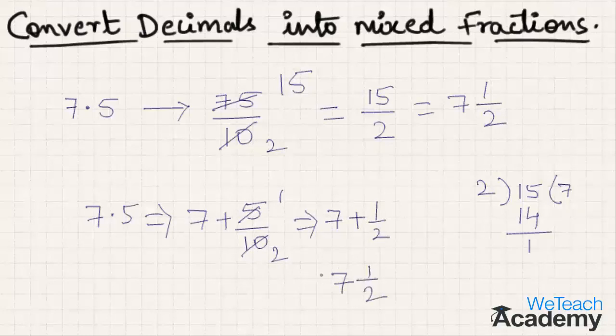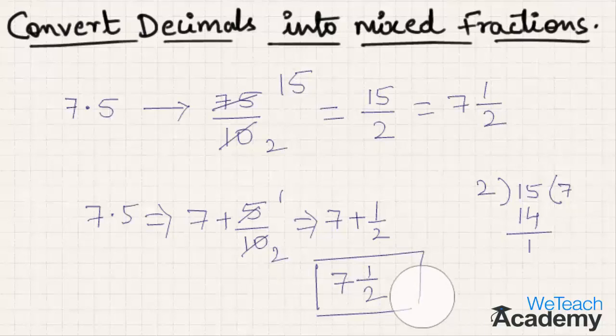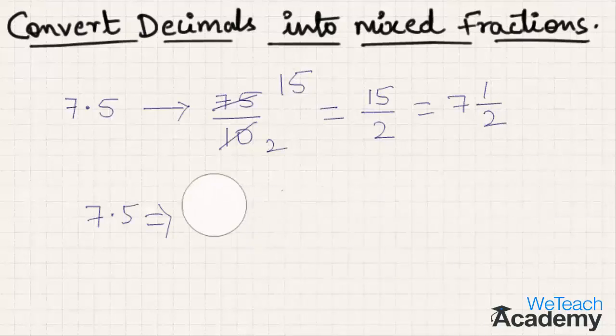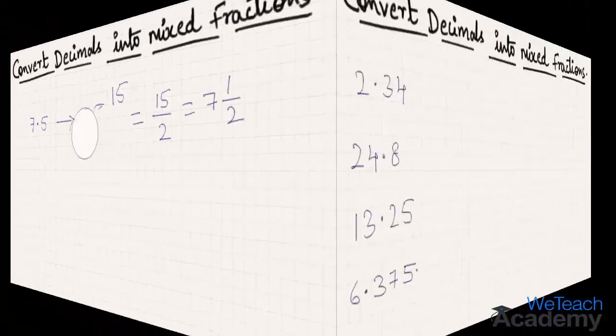Hence we get the same result. Therefore for converting decimal numbers into mixed fractions we can use any of these two concepts. Now with the help of this concept let us consider a few more examples and try to convert them into mixed fractions.